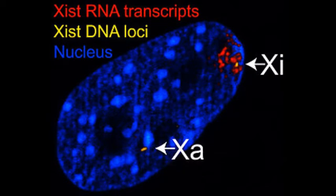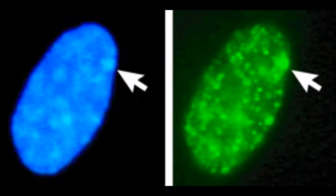This inactive X chromosome forms a condensed state seen as a Barr body in the periphery of the nucleus of each cell.